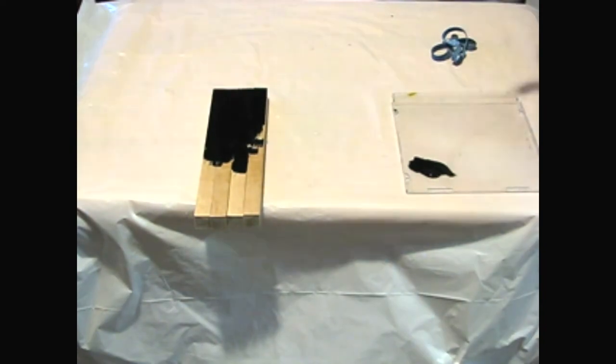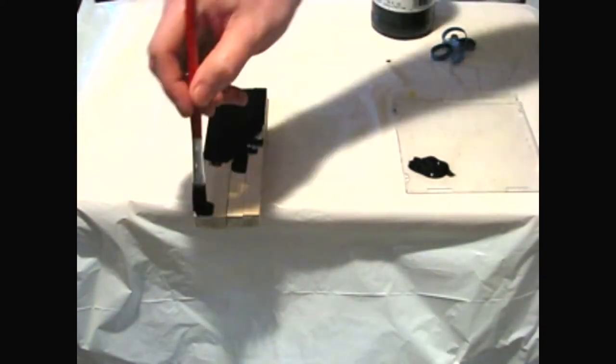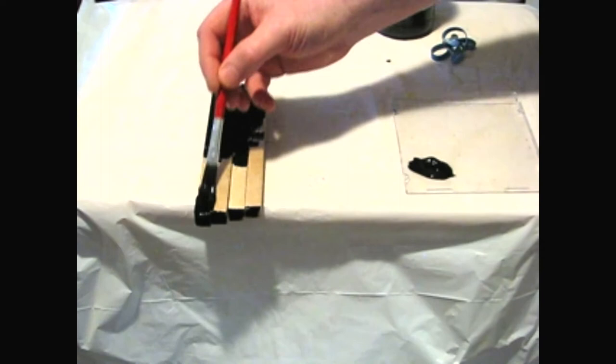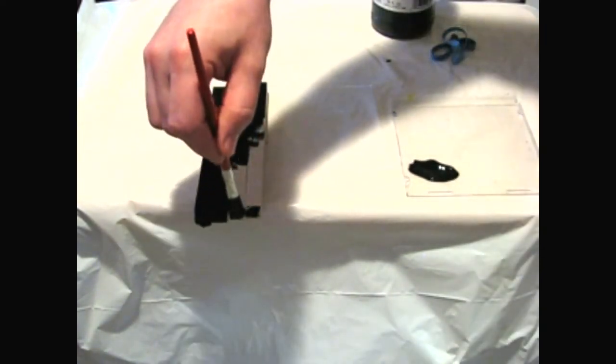Also, if you wanted to create a traditional floating frame by attaching the standoff inside a shadow box, painting the standoffs black hides them quite well.